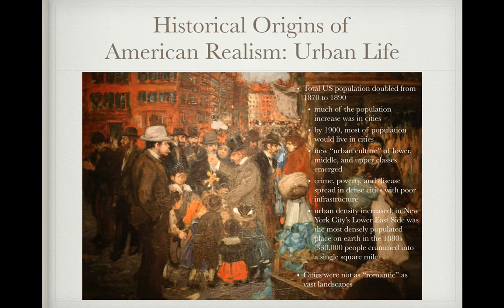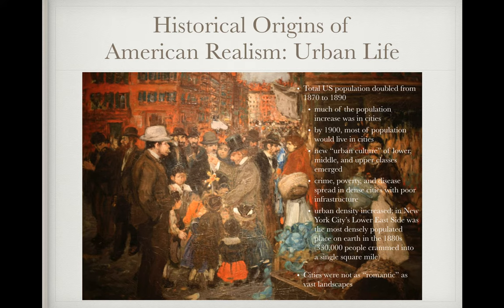You also had a rising urban population. People wanted objective descriptions of life in urban cities rather than Romantic descriptions of nature they didn't actually know. By 1900, most of the U.S. population was living in cities, and there was a need to portray urban culture objectively so people could identify with it. New York City's Lower East Side was the most densely populated place on earth, so Romantic descriptions of the Hudson River simply wouldn't work for this population.